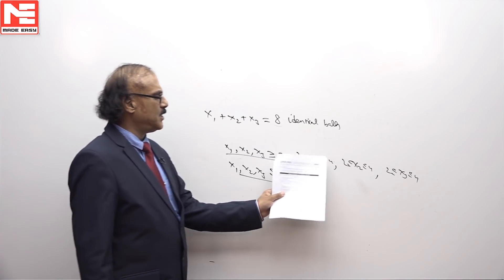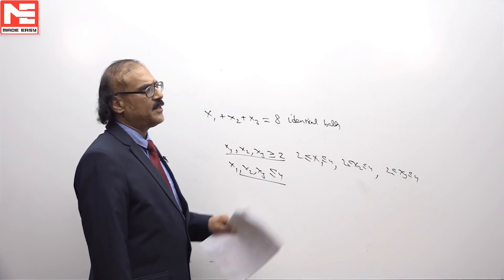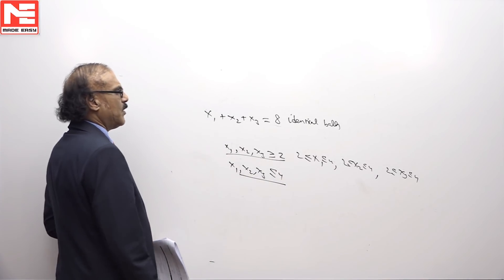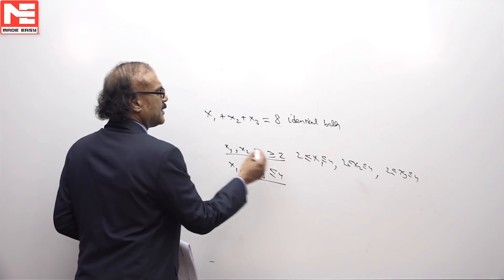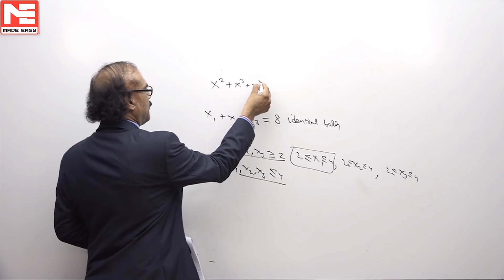Since the problem involves upper constraint, this 4 is less than 8, clearly it involves upper constraint. We will use generating function method. What does generating function method say? Find the generating function for this, it is x square plus x cube plus x power 4.